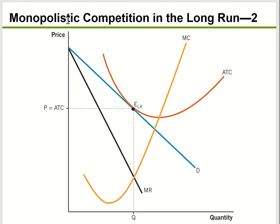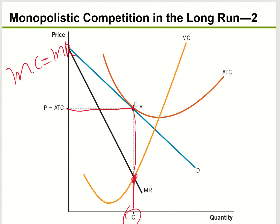So in the long run, the graph for monopolistic competition looks like this. Find where marginal cost equals marginal revenue, go down to get quantity, go up to the demand curve to get price, and also go to your average total cost curve. Now you see that price is equal to average total cost, meaning this company is breaking even — zero economic profit.